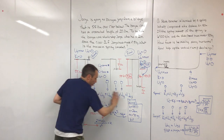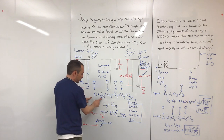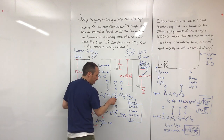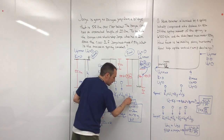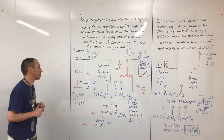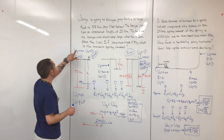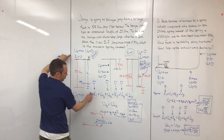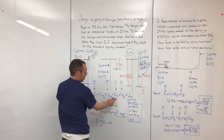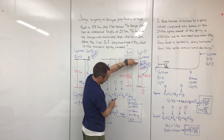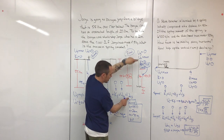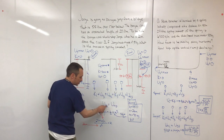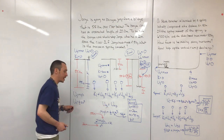We write our general equation: K-initial plus UG-initial plus U-elastic-initial equals K-final plus UG-final plus U-elastic-final. In the initial situation, UG is max, K-initial is zero, and U-elastic is zero. In the final situation, K is zero, UG is zero, but U-elastic is max. So we rewrite the equation getting rid of the zero variables, and we see that UG-initial equals U-elastic-final.